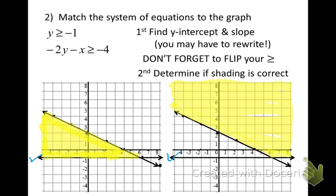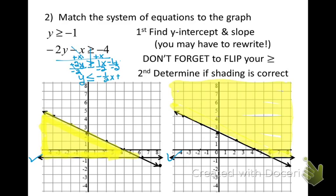Now I look at my next equation, which has not been solved for y, so I need to do that. I add x to both sides, giving me -2y is greater than or equal to 1x minus 4. Then I divide by -2. Since I am dividing across an inequality by a negative number, I must flip my inequality sign. That gives me y is less than or equal to -½x plus 2.